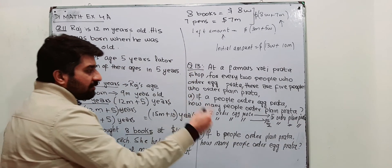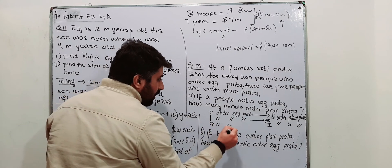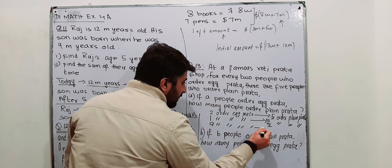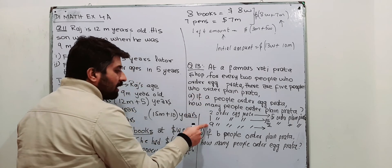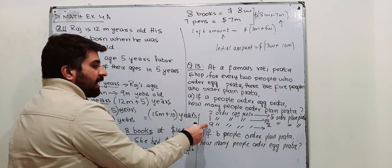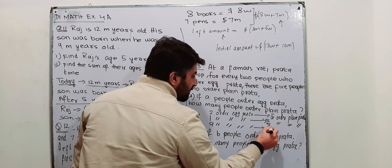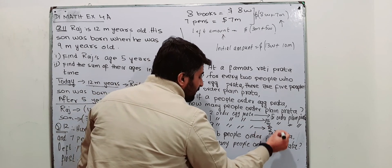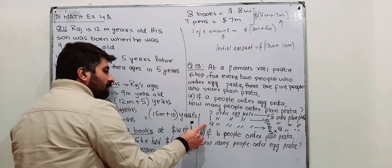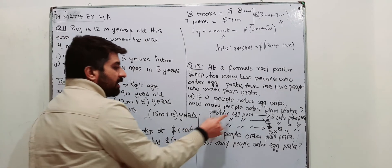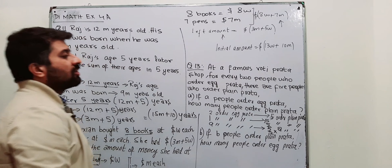So for every one person who orders egg pratha, there are 5/2 people who order plain pratha. For every a people who order egg pratha, how many will order plain pratha? That is quite simple: 5/2 multiplied by a. So if a people order egg pratha, then 5a/2 will order plain pratha.